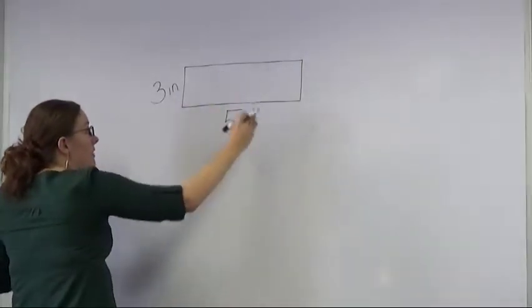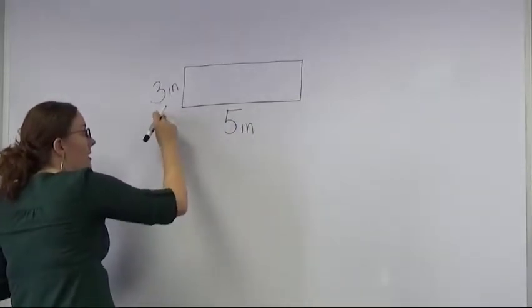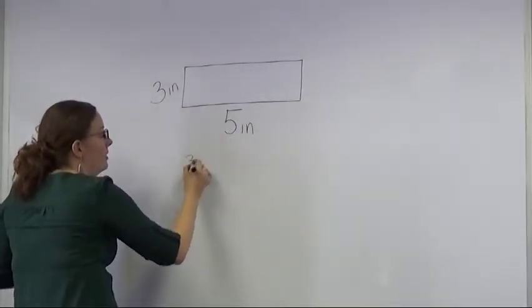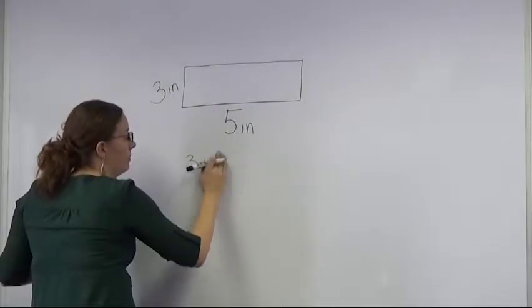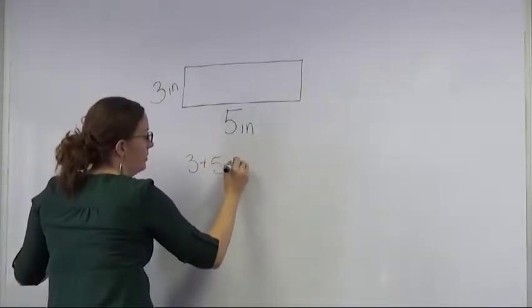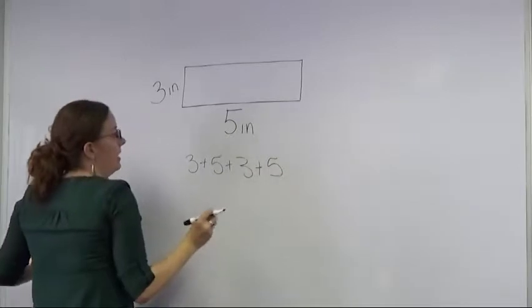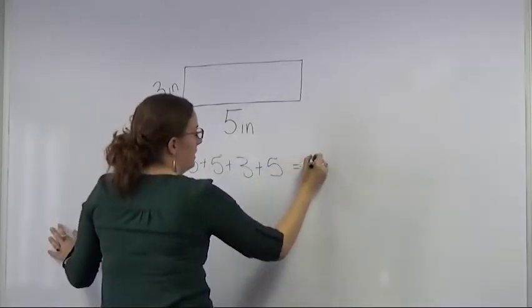So if we wanted to find the perimeter of this rectangle, we would add three plus five plus three plus five, and then that would equal 16.